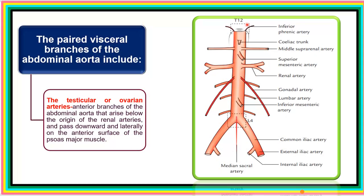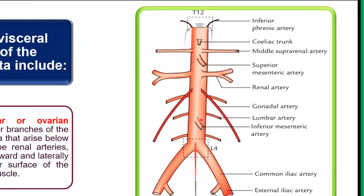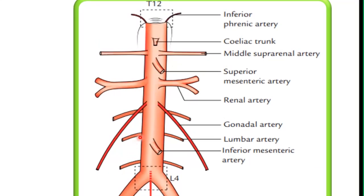For the gonadal arteries, they come off from a level below the renal artery and from their point of origin run downwards on the surface of the psoas major muscle.